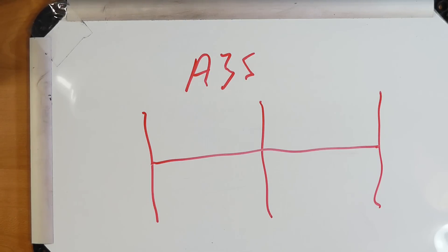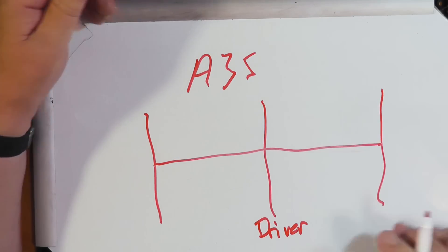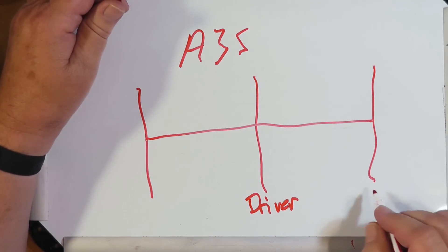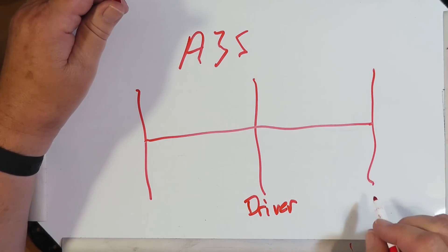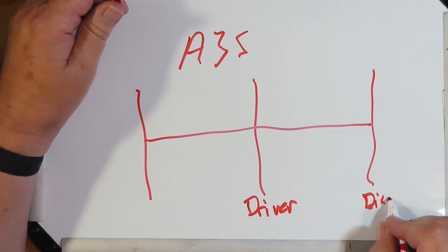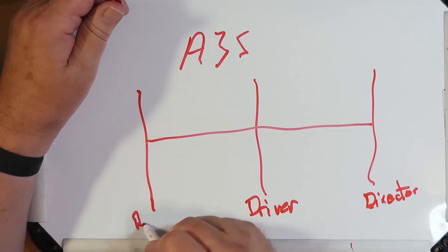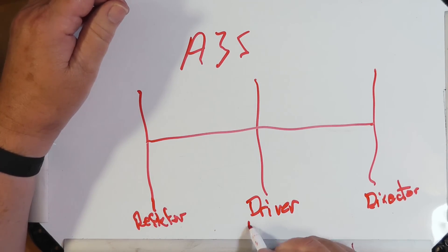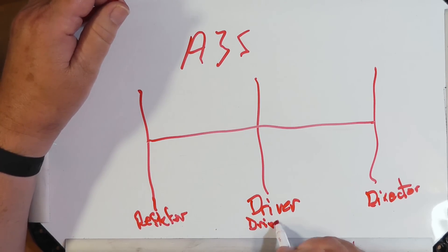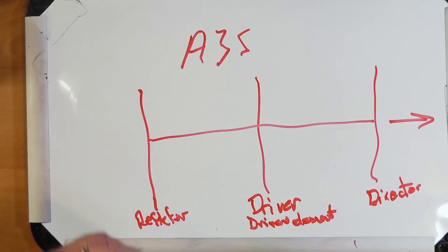The center element is what's called the driver. This element is shorter, so it's the director, and this element is a little bit longer and is the reflector. This is sometimes called the driven element, and the direction of propagation is that way.